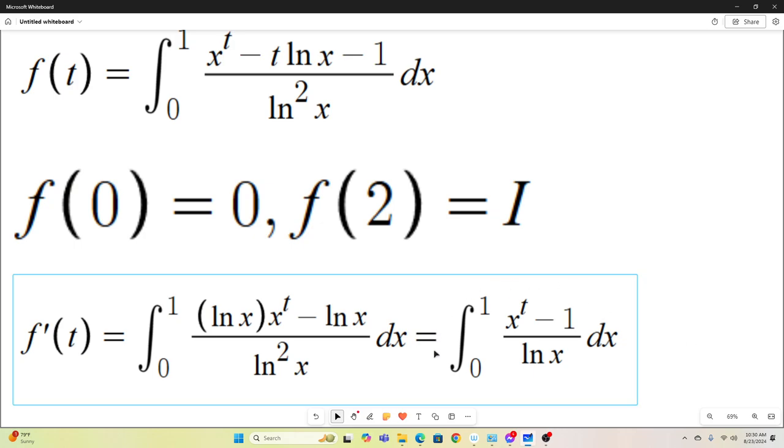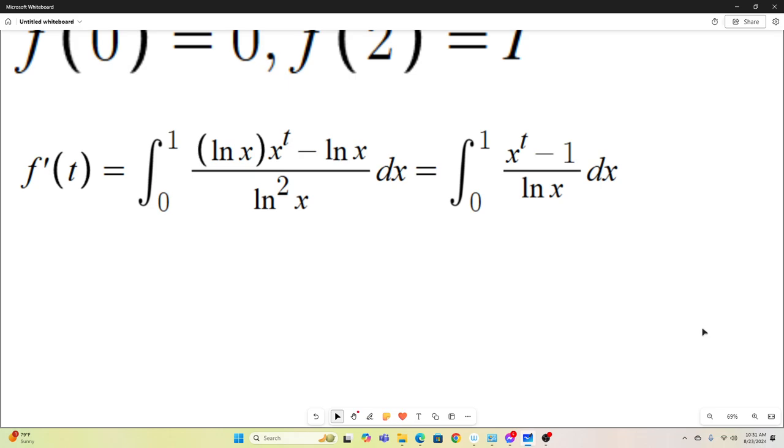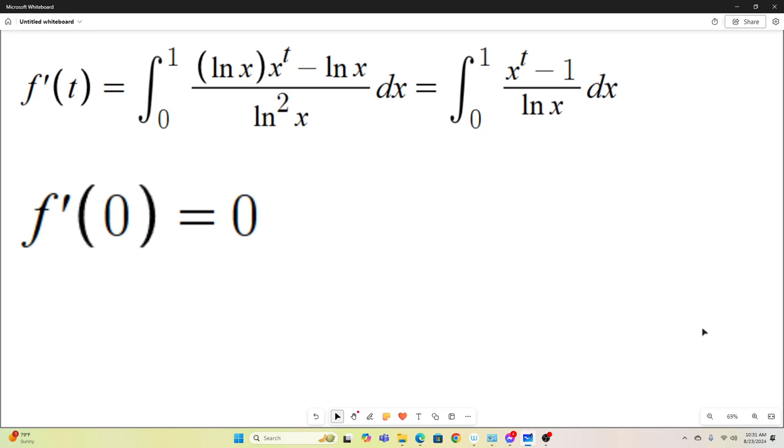And I actually solved, or this integral came up as a reparameterization of another integral that I did way, way back when I first started this channel. But anyway, now we have f prime of t is equal to that integral. Let's notice that f prime at 0 again is equal to 0. So now we know f at 0 is 0 and f prime at 0 is 0.